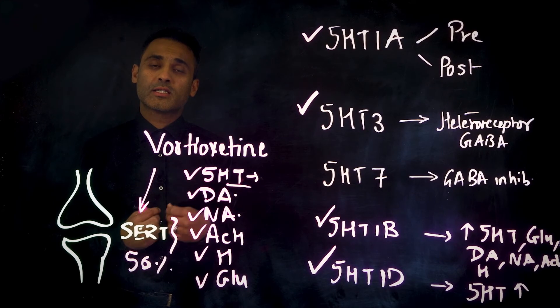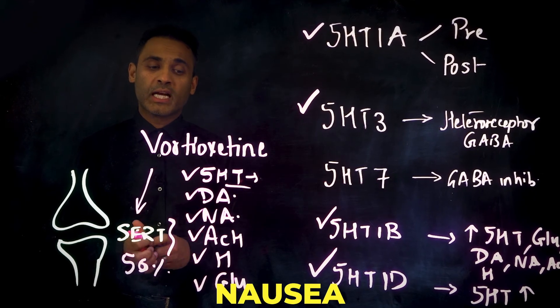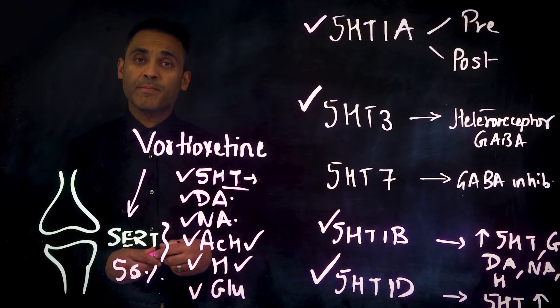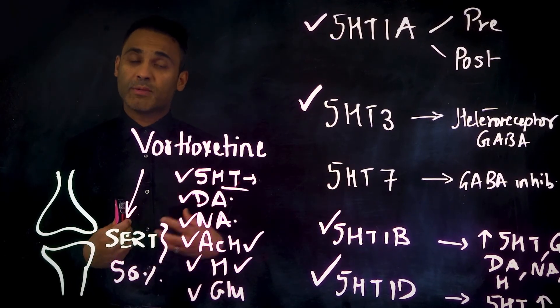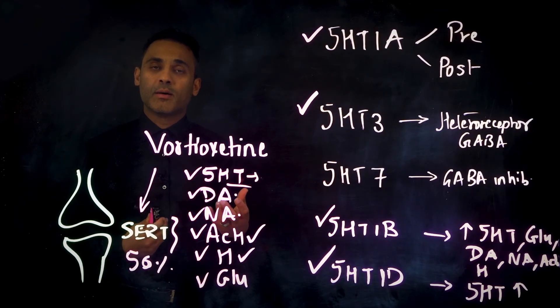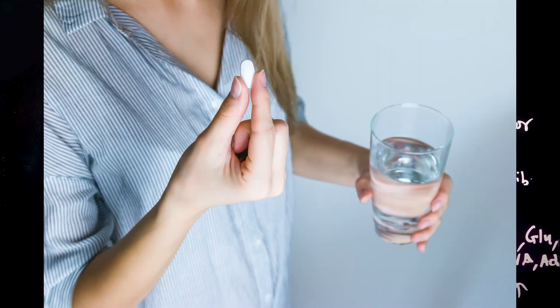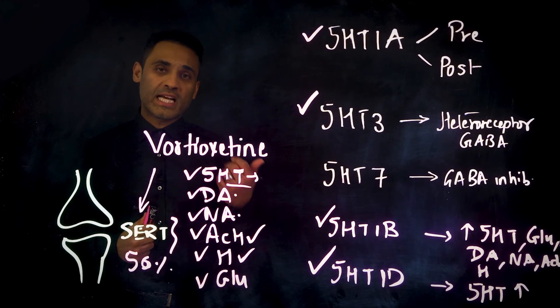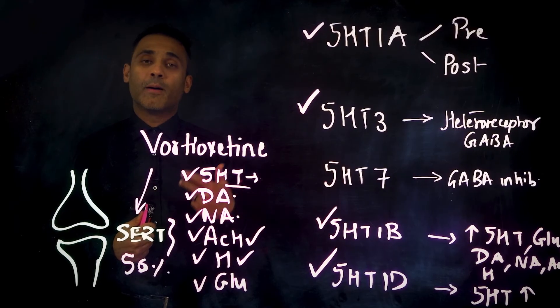The main side effects sometimes are nausea, and this is most likely due to acetylcholine and histamine, because histamine particularly releases acid in the gut. And this can be counteracted by asking the patient to take the medication with food, or sometimes prescribing ondansetron, or a PPI.